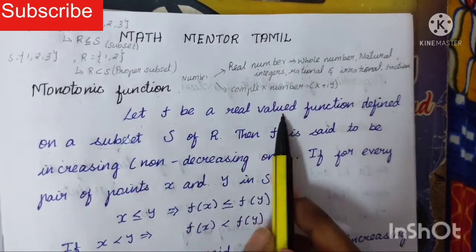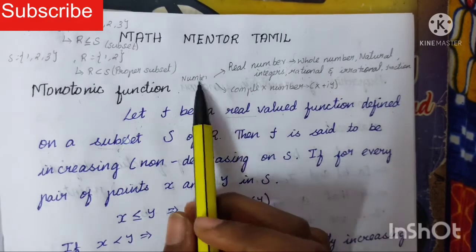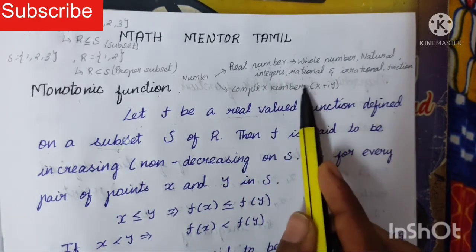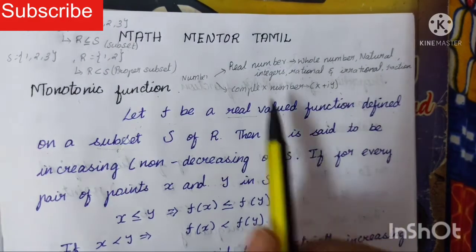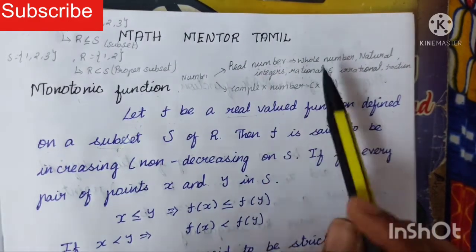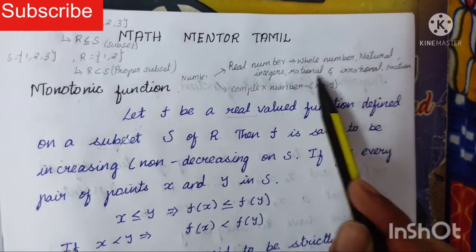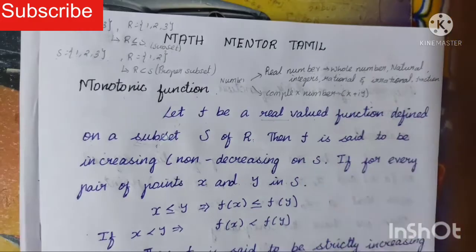Let f be a real valued function. First of all, we need to know what is meant by real numbers. Numbers are divided into real numbers and complex numbers. Complex numbers are denoted by x plus iy. Except this, all other numbers are real numbers. Real numbers contain whole numbers, natural numbers, integers, rational numbers, irrational numbers, fractions, etc.